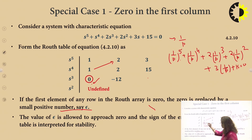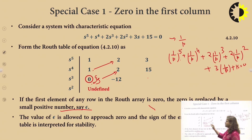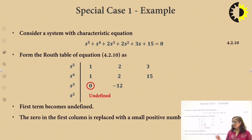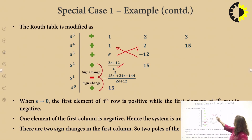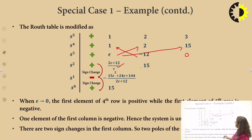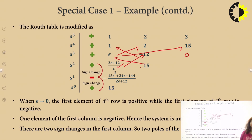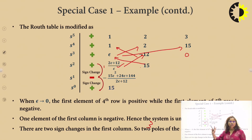We replace 0 by eta (η). The next element is calculated as (2η − (−12)) / η = (2η + 12) / η. The next element is 15. Subsequently we compute (this value × (−12) − 15η) / (this value), which comes out to be (−15η² + 24η + 144) / (2η + 12). The last element is 15. As eta tends to 0, this value turns out to be negative. So there are two sign changes, meaning the system is unstable and two roots are in the right half of the s-plane.